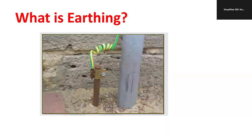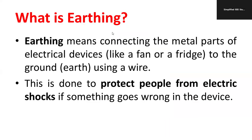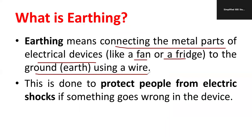You might have seen these kinds of diagrams and this kind of installation in your houses and buildings. Earthing is nothing but connecting the metal part of electrical devices — for example, appliances like a fan or fridge — to the ground using a wire called the earth wire. The non-current carrying metal part is directly connected to the ground.